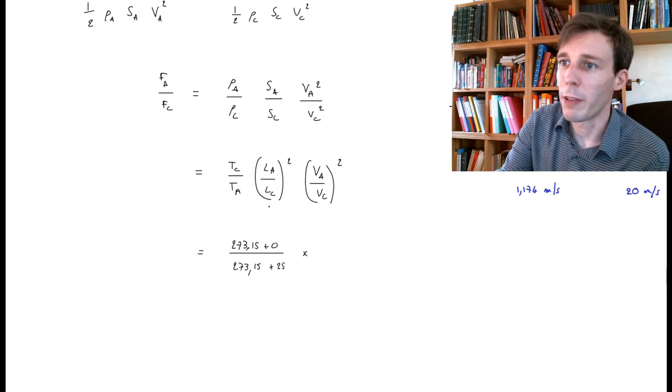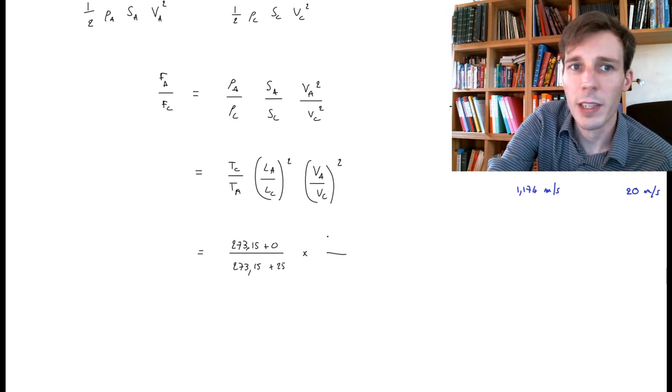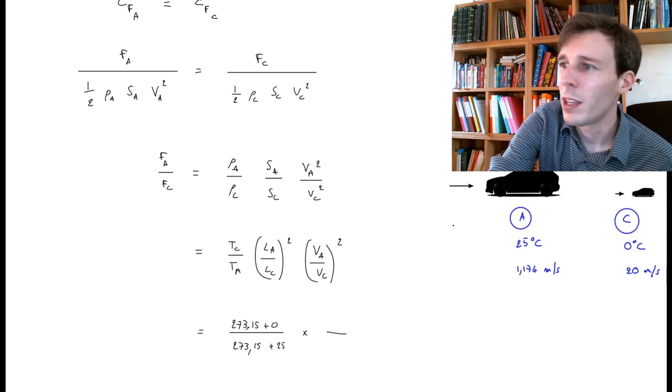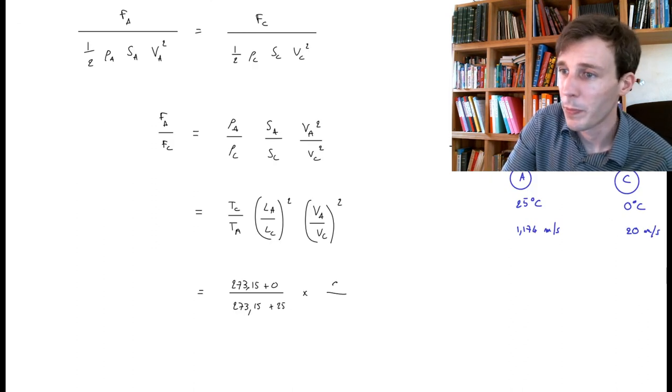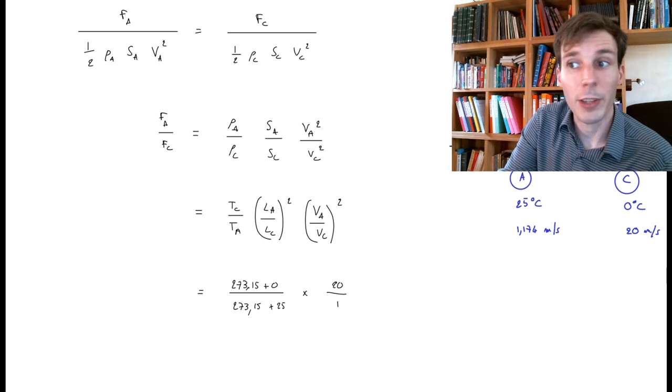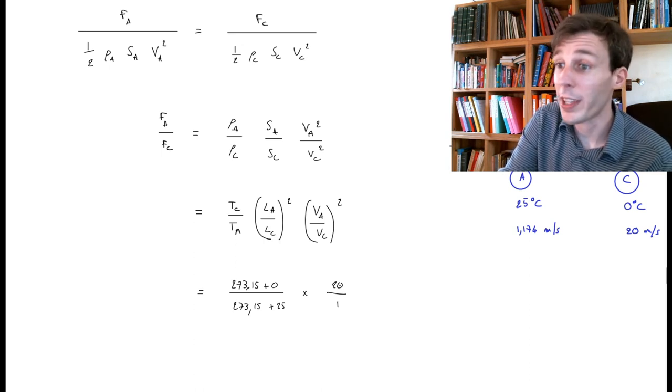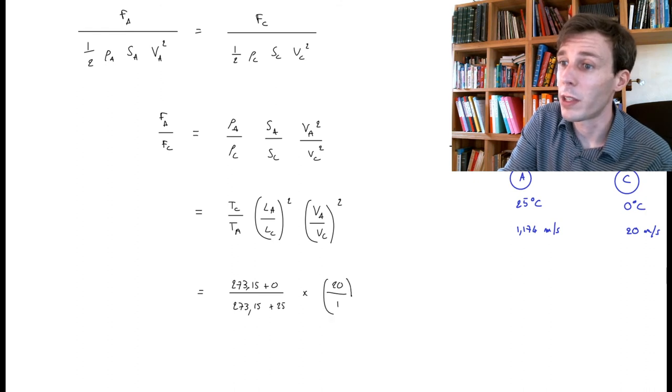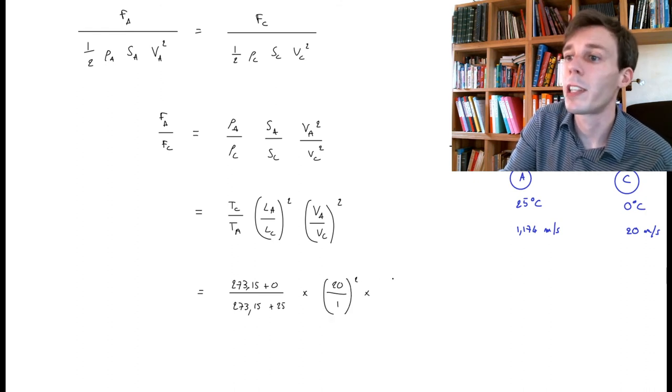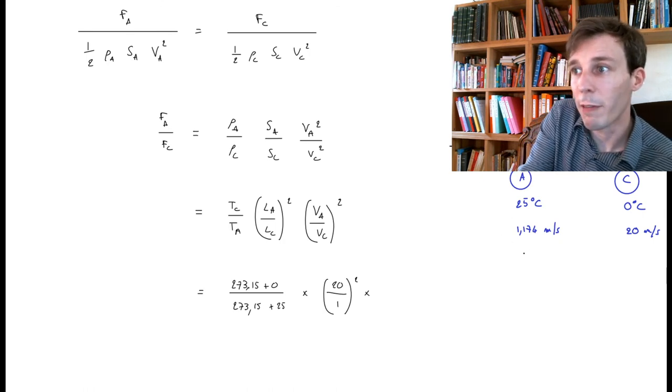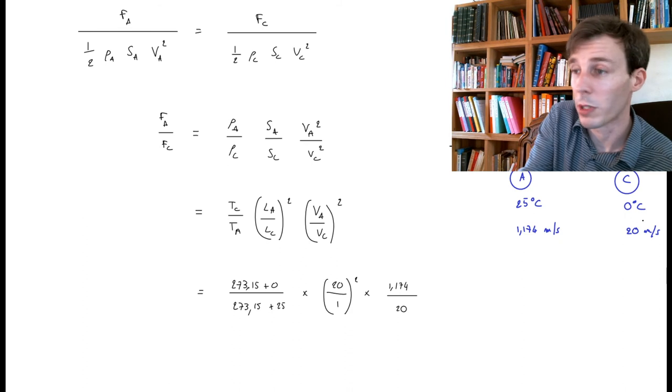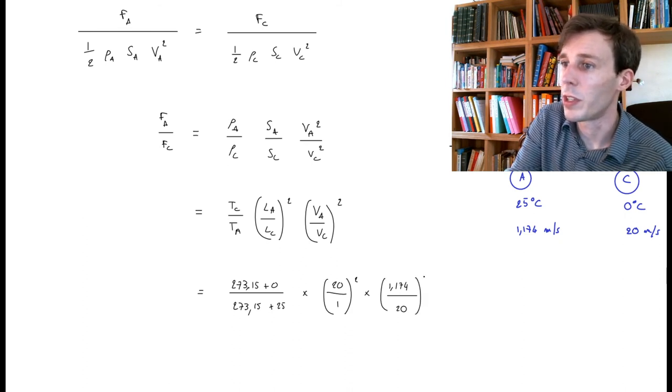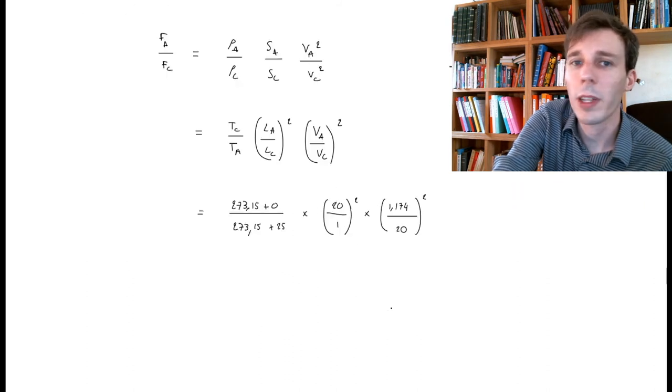And I multiply this by the ratio of lengths. And this is, pay attention, LA divided by LC, the length of the real car divided by the length of the model. And this is 20, 20 divided by 1, 20 to 1. Again, I don't know what LA is. I just know that LA is 20 times larger than LC. And so this is 20 divided by 1 squared. And then I multiply this by the velocities. And the velocities are given right here. I have the velocity for A, which is very low, 1.174, and I divide this by 20, the number of meters per second on the small-scale model here, which is squared, like so.